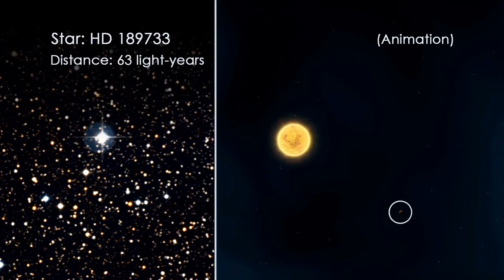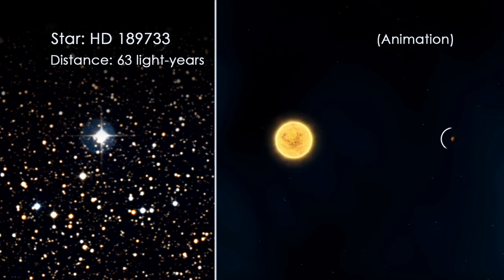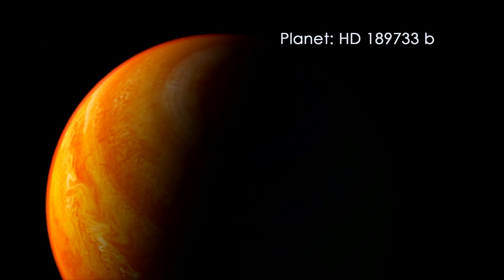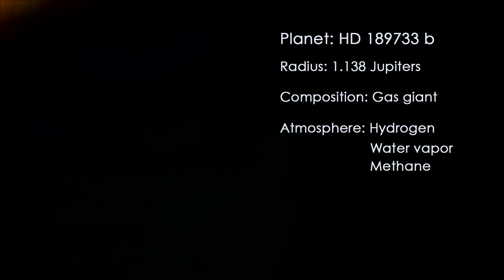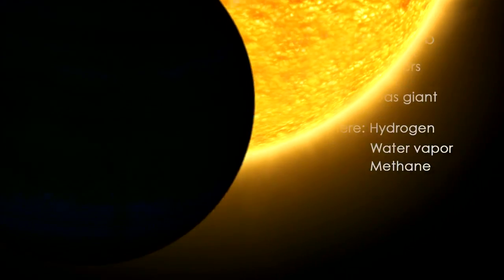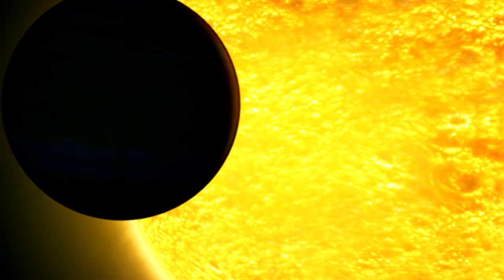Because most exoplanets are too far away to be directly imaged, characteristics such as size, composition, and atmospheric makeup must be determined through a variety of indirect methods.